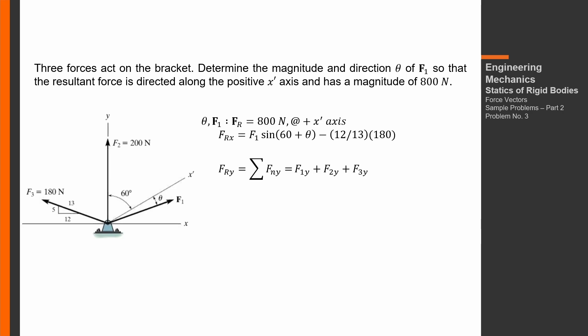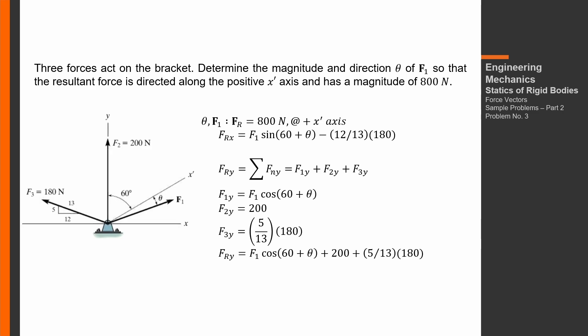For the summation of y-components: F1y equals F1 cosine(60 + theta), because the y-component is adjacent to angle (60 + theta) based on the figure. Then F2y equals 200, directed along the y-axis. F3y equals (5/13) times 180, using the same triangle format as F3x. The summation of y-components equals F1 cosine(60 + theta) plus 200 plus (5/13)(180), all positive because all y-components are directed upward.